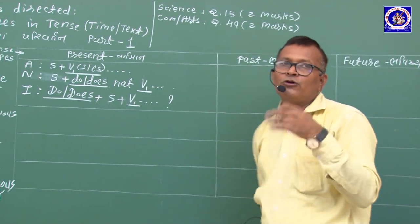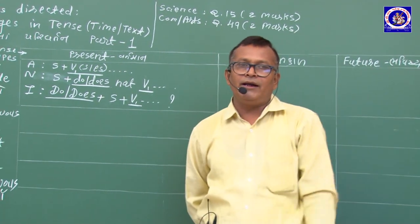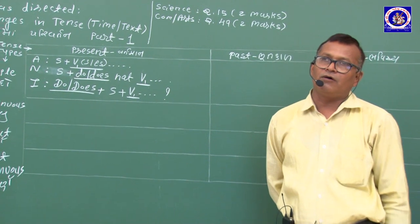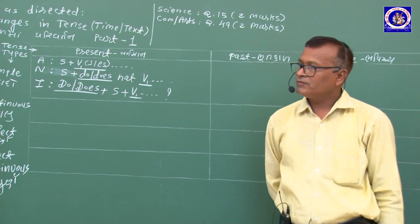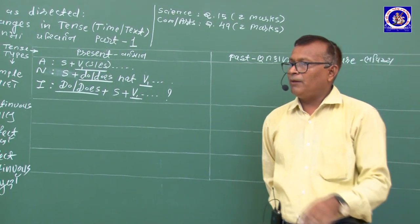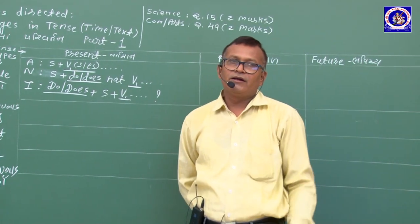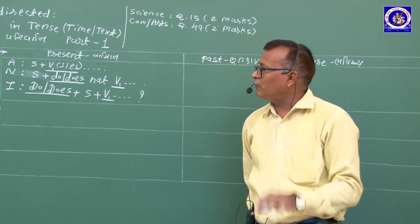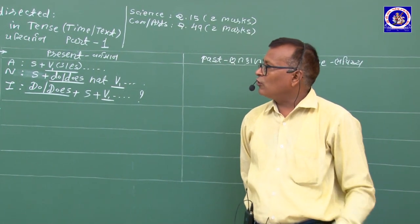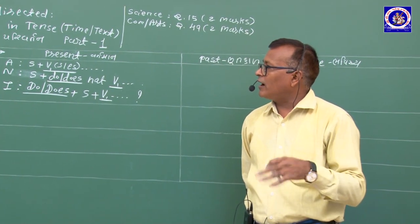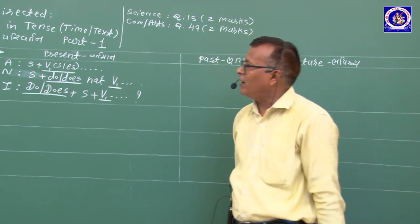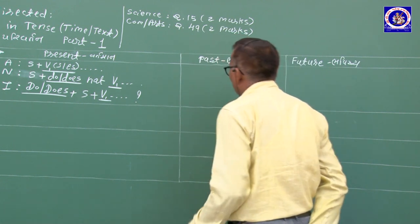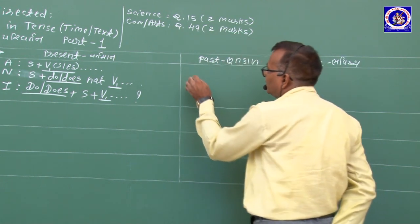Simple Past Tense — સાદો ભૂતકાળ: અગાઉ ભૂતકાળમાં બનેલી ક્રિયા દર્શાવવા માટે સાદા ભૂતકાળનો ઉપયોગ કરવામાં આવે છે. દા.ત.: 'I wrote a paper' — ક્રિયા પૂરી થઈ ગઈ. 'You came to school' — અગાઉ ભૂતકાળમાં બનેલી ક્રિયા દર્શાવે.